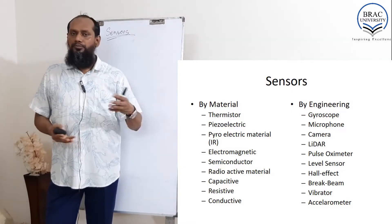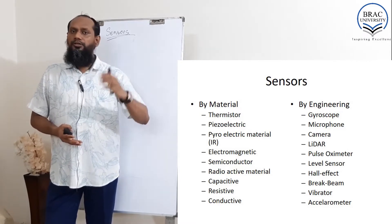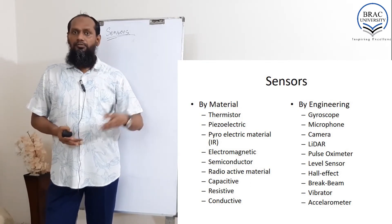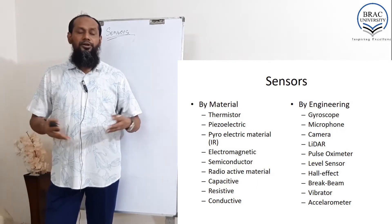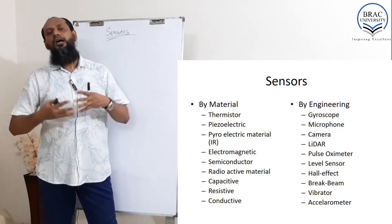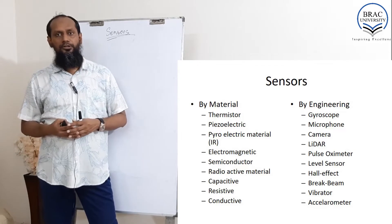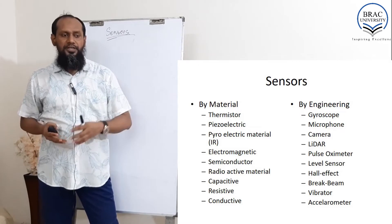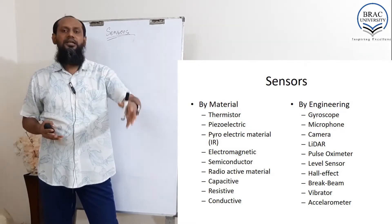Electromagnetic material — by the name you can understand — reacts with magnetism. Semiconductor reacts with a lot of things: temperature, light, electric flow, and more. Radioactive material is not actually a sensor but it is used to sense the world in some way; for example, in smoke sensors, radioactive material is commonly used. Then capacitive, resistive, and conductive sensors are also in the list of materials.